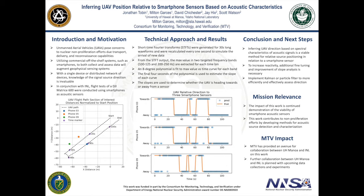Once those max values are extracted, an 8-degree polynomial is fit to the max value versus time plot for each band. From that, the final four seconds corresponding to the polynomial is used to estimate the slope of each curve.